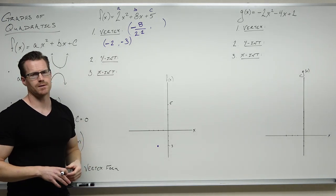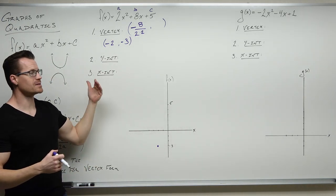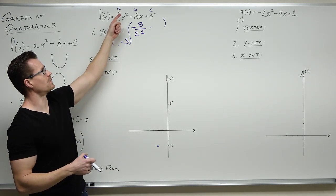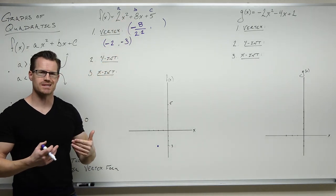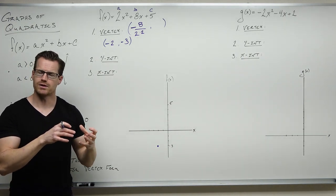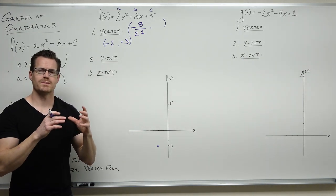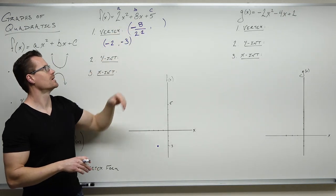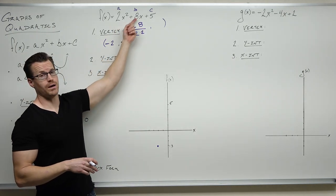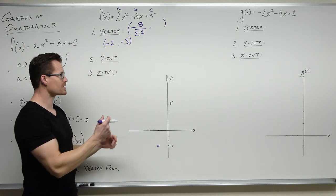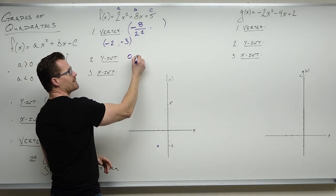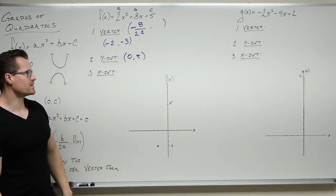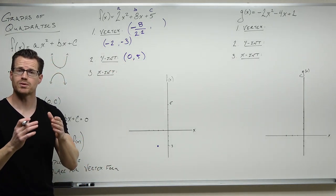The y-intercept is really easy. It should take about five seconds to find. If you evaluate your function for x equals 0, you're only going to be left with the c value, because the x-squared and x terms drop out. So we know that our y-intercept is at 0, 5. We're going to plot that next.